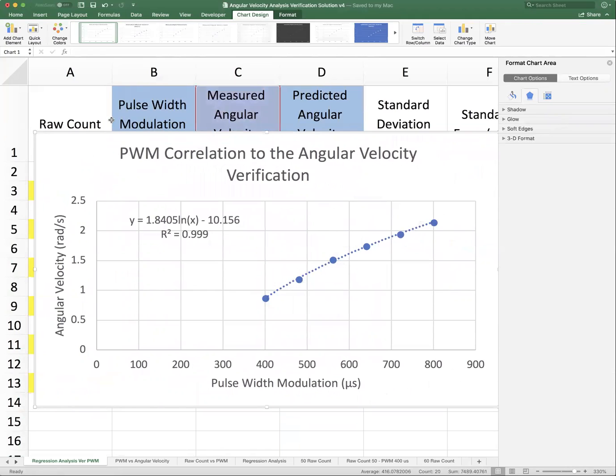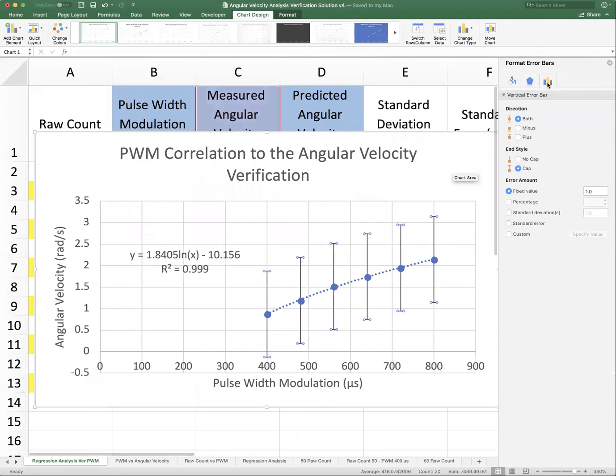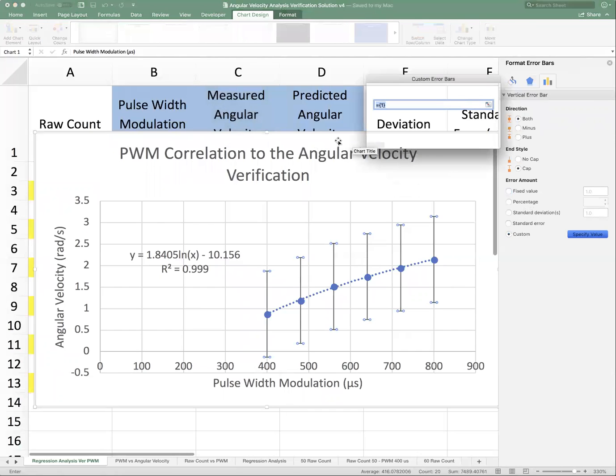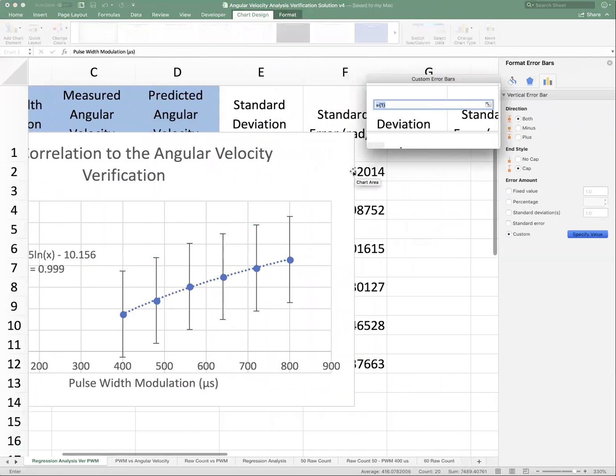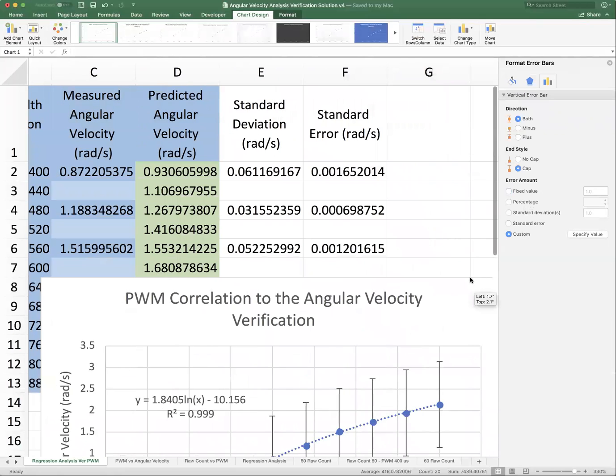This is pretty good. Now I want to put error bars on here. Let's just go to error bars, more, select on this, and then custom specified value. So let me go here, and this is the standard deviation. Let me just cancel because I need to move this chart out of the way.